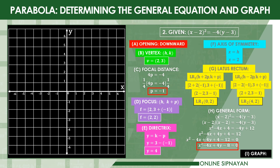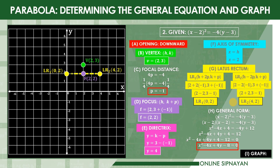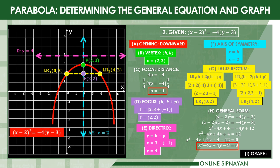Last is the graph. We plot the vertex at (2, 3), then the focus at (2, 2), and the latus rectum endpoints: LR₁ at (0, 2) and LR₂ at (4, 2). Connect the points to form the parabola. Then draw the directrix at y = 4 and the axis of symmetry at x = 2. That is the graph of (x − 2)² = −4(y − 3). Thank you for watching!